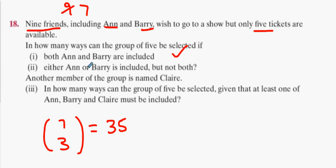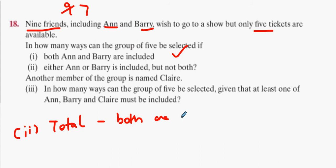Either Ann or Barry, but not both. Okay. I have a suggestion for 18 part two. Here would be my suggestion. Total, take away both are going. If you get the total and you take away the amount of ways both of them are going, then what's left is only one of them is going.